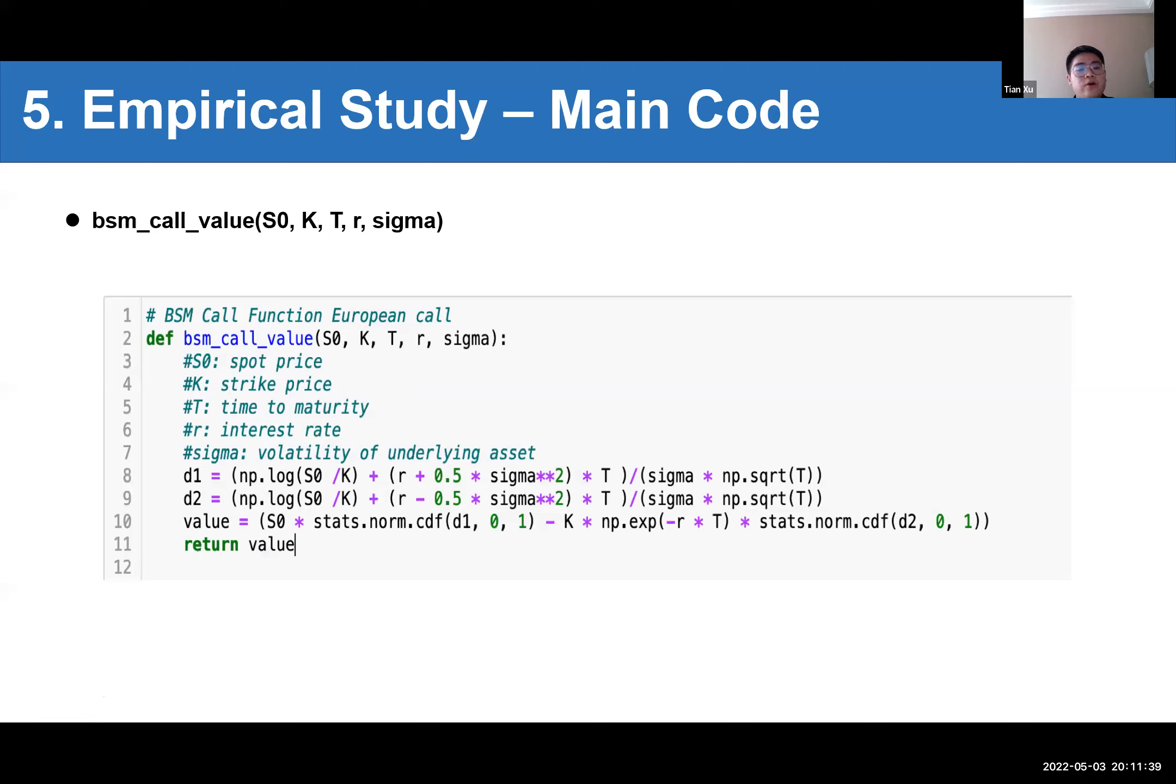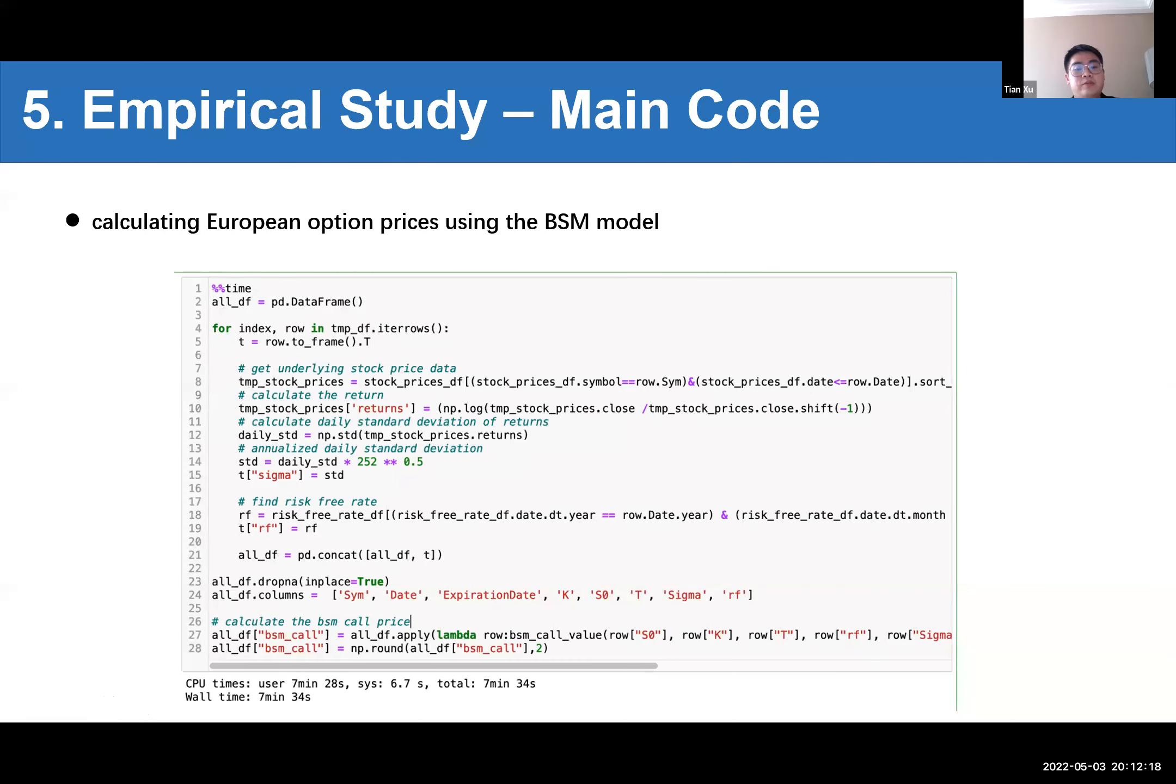Well, as mentioned before, we will compare with the Black-Scholes model. In that case, we create a BSM call value function that accepts five variables from the Black-Scholes model. S0 means spot price, K represents strike price, T represents time to maturity, R represents interest rate. Sigma represents the volatility of underlying assets. And the final output is the value, meaning the price of European call options. And then we need European option pricing using the Black-Scholes model. A for-loop is used to traverse each row of the data, calculating the historical return in here.